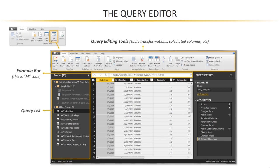On the left side of the Query Editor, we've got our Query List. Here you can see I've got nine individual connections or data queries in place. You can click through to see previews of your data, edit the properties, change the applied steps — basically any modification you want to make to an existing query. As you select individual queries, you'll see the data preview in the middle of the screen update.